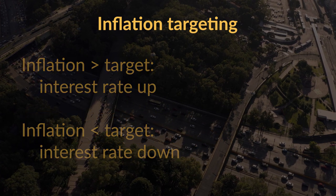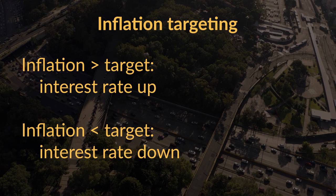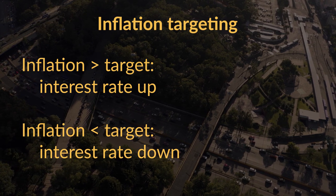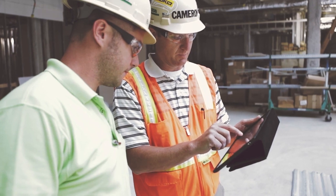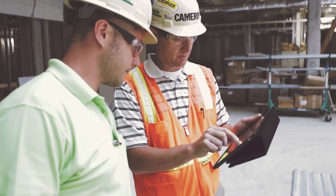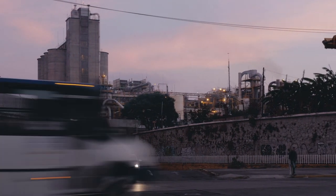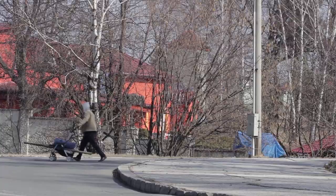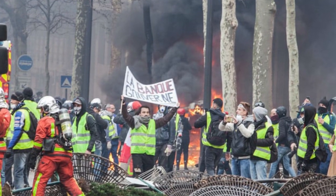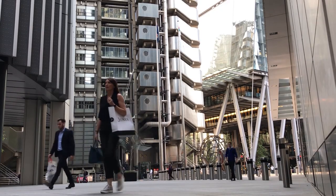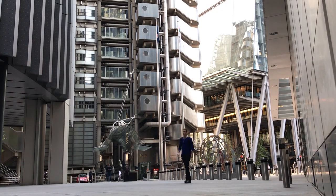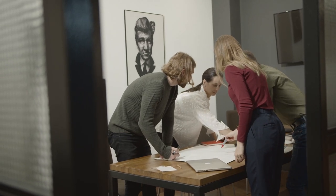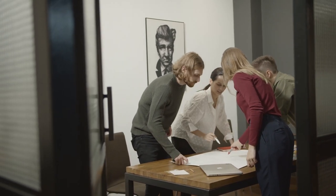When inflation is too high, central banks will often increase the interest rate; when inflation is too low, they will tend to lower it. The central bank believes that inflation depends on unemployment: low unemployment leads to inflation, while high unemployment leads to deflation. If unemployment is very low, workers demand higher wages, wages rise, companies see profits shrink and raise their prices, and since all companies do this simultaneously, the overall price level rises — that is inflation.